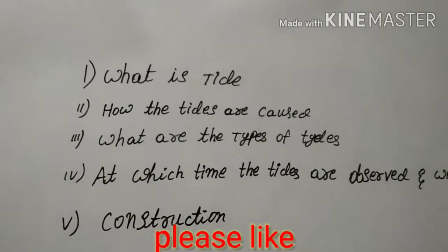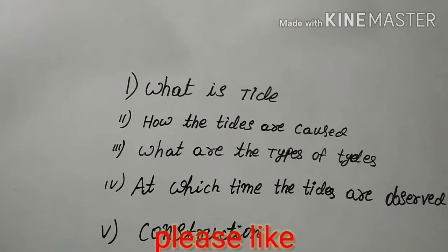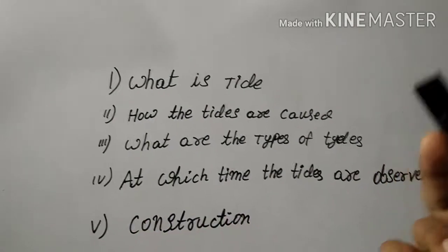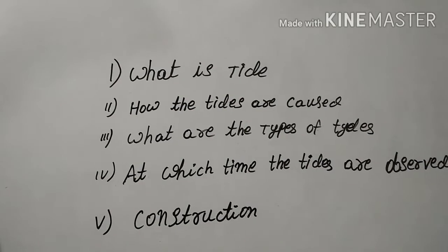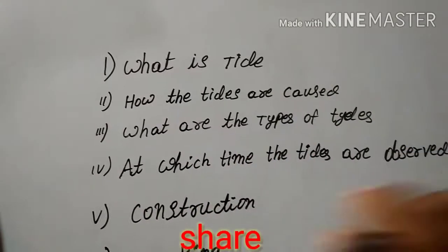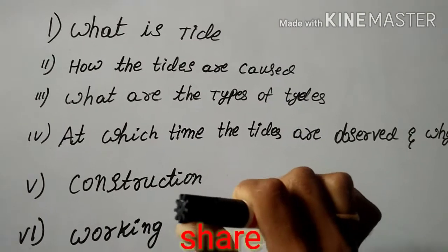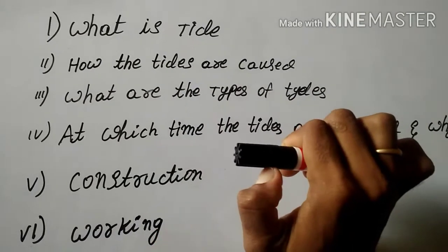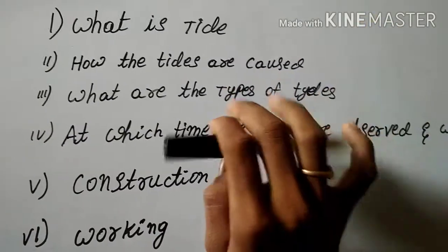First, what is a tide? A tide is the rising and falling of the ocean water on the surface. How are tides caused? The tides are caused due to changes in the gravitational forces external to the earth, from the moon and from the sun.